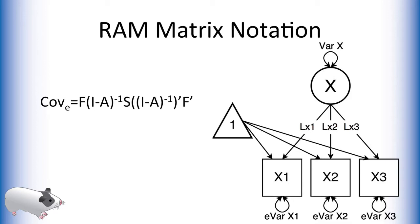This specific equation is known as the RAMPATH notation. RAM notation is a way of converting any path diagram into three matrices which can then be used to create an expected covariance matrix.